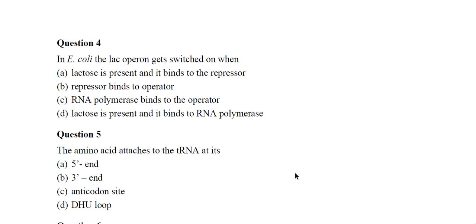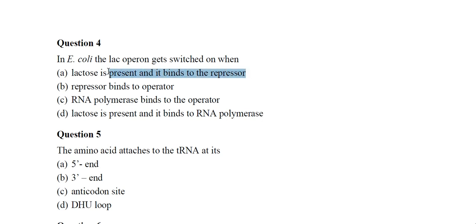Question 4: In E. coli, the lac operon gets switched on when — the options include lactose is present and it binds to the repressor; repressor binds to operator; RNA polymerase binds to operator; or lactose binds to RNA polymerase. The correct answer is: lactose is present and it binds to the repressor.